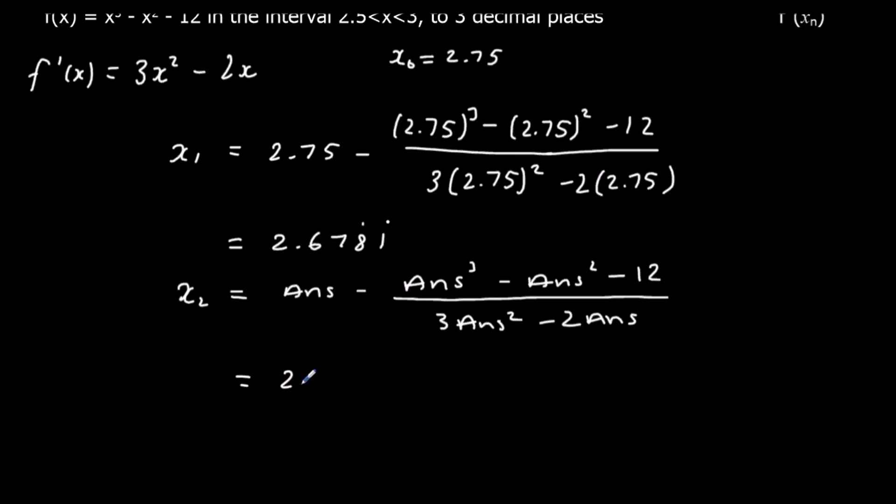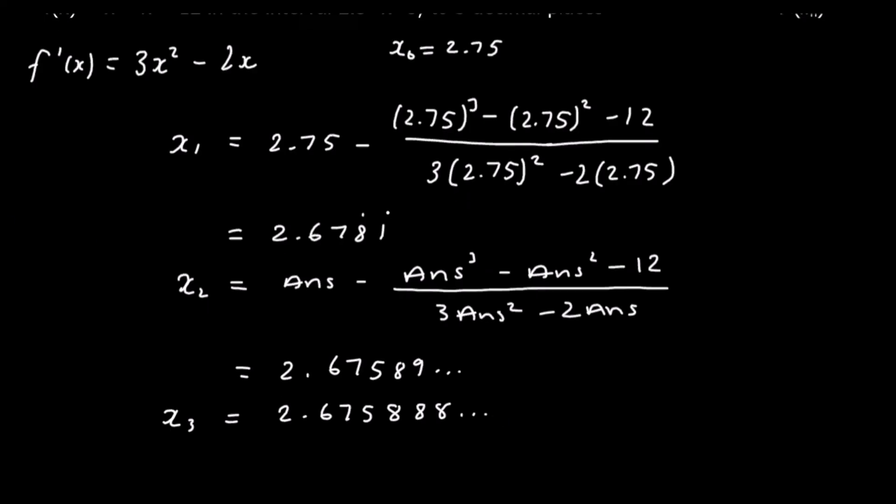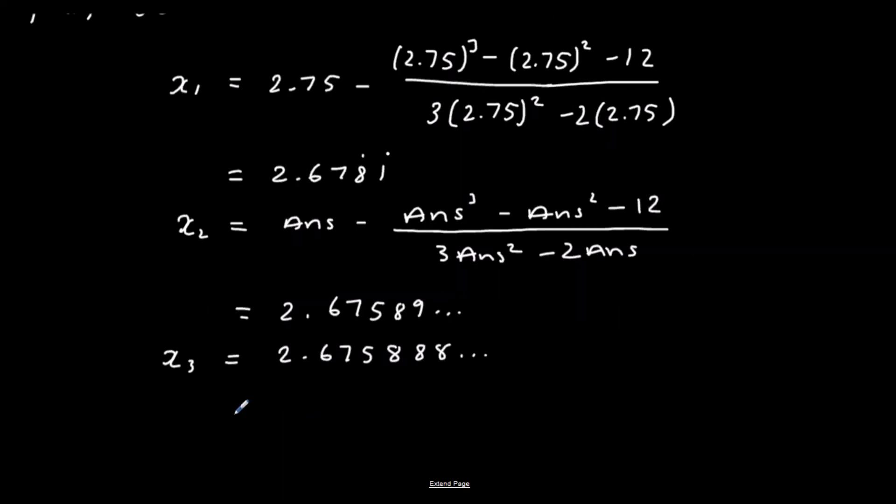I'm going to press equals again for x₃. I've got 2.67588, and so on. So to three decimal places, we've got 2.676.